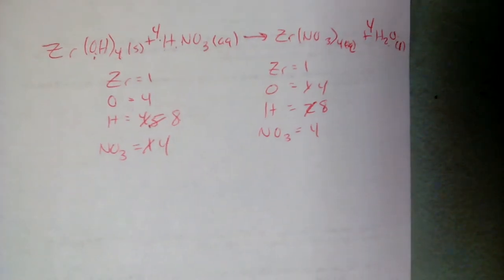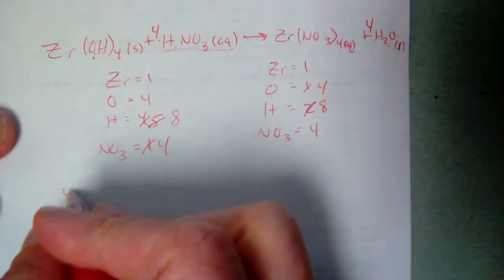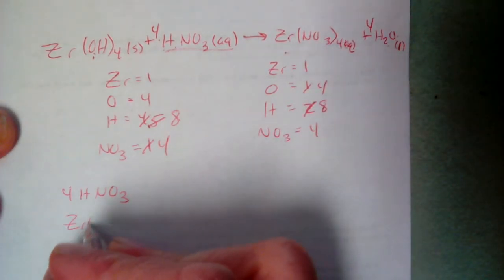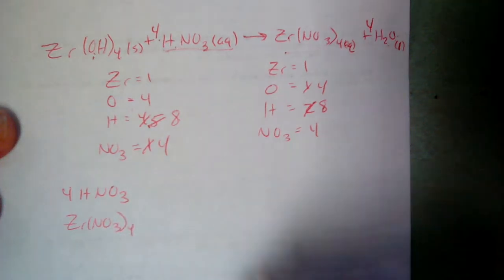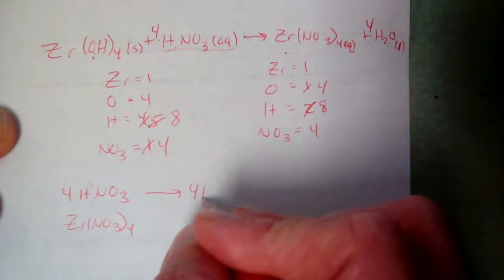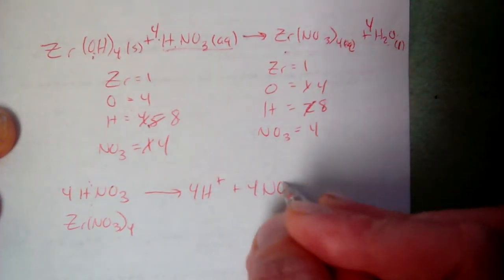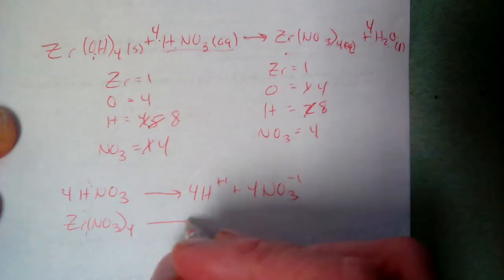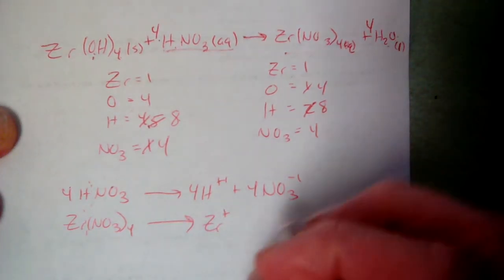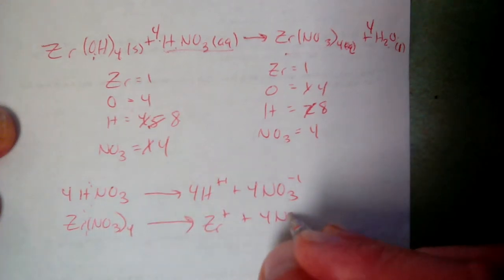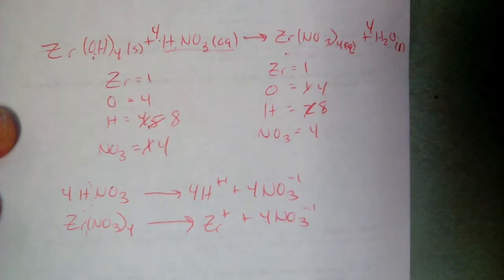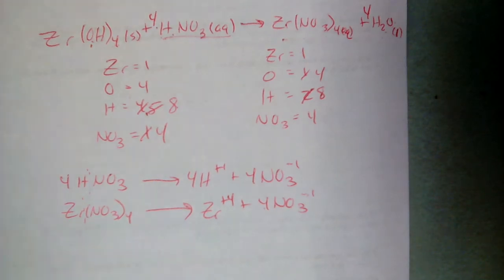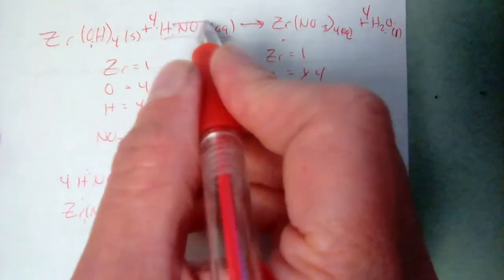Now balance and break down the aqueous species. HNO3 (aq) dissociates into H⁺ and NO3⁻. With a coefficient of 4, that gives 4 H⁺ and 4 NO3⁻. Zr(NO3)4 (aq) breaks down after the zirconium: Zr has some positive charge, and there are 4 NO3⁻ ions each with −1, totaling −4, so zirconium must be +4 — hence zirconium(IV) nitrate.